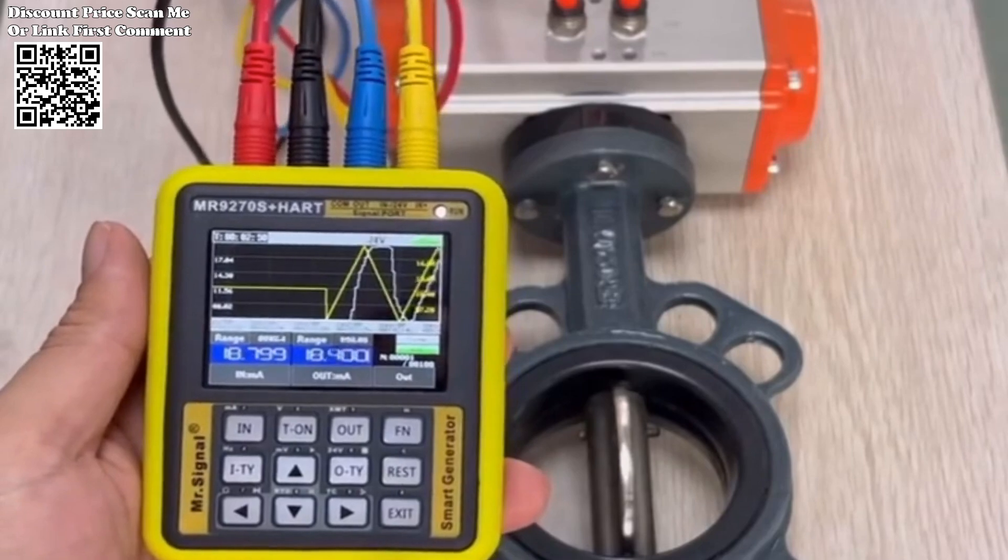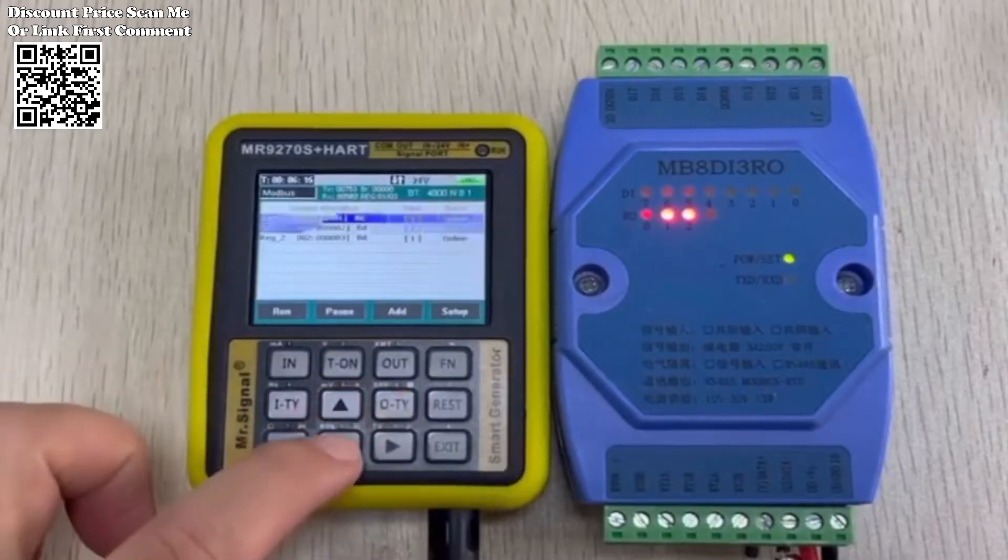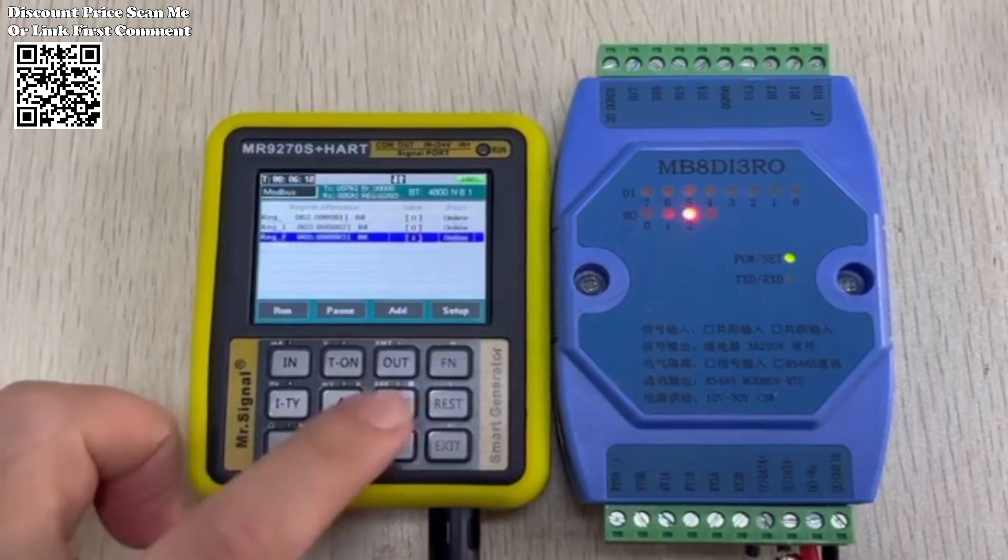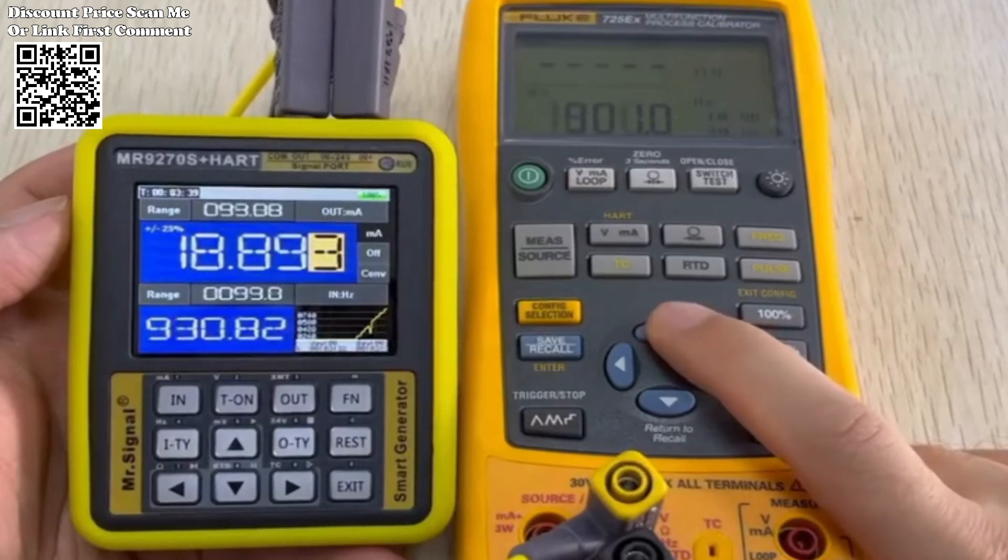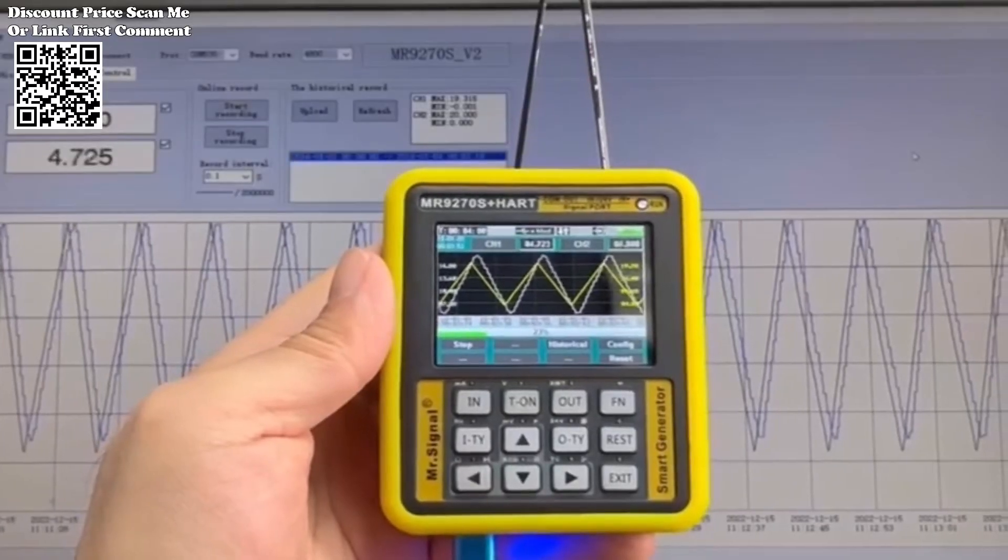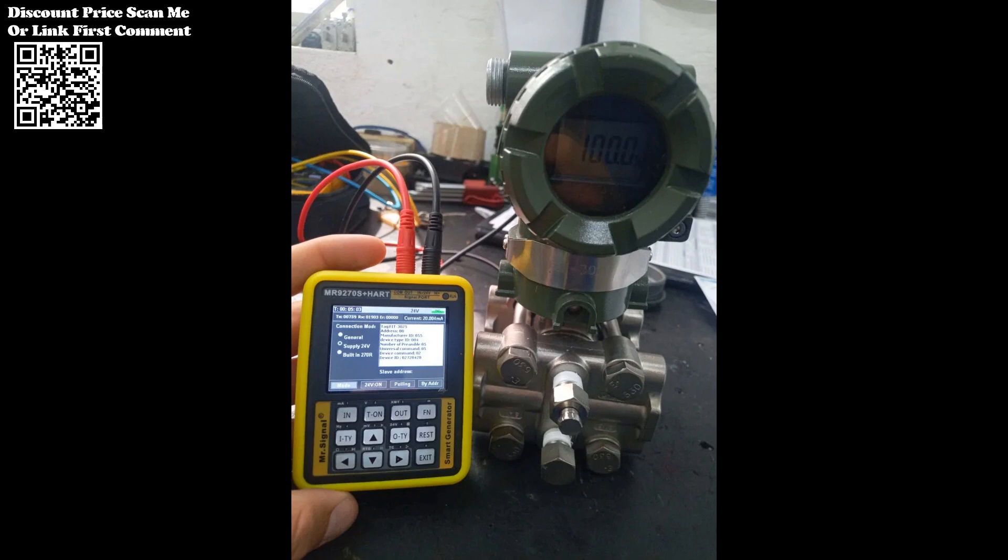Feature 1: HART communication protocol. Feature 2: Simultaneously measure input and output signals. Feature 3: The current and voltage signals can be programmed for output with two output modes. The first mode sets the starting point, ending point, and number of cycles to start working. The second mode, advanced mode, where signal changes are all set by parameters.